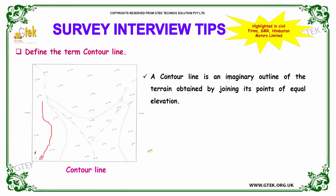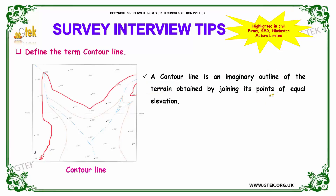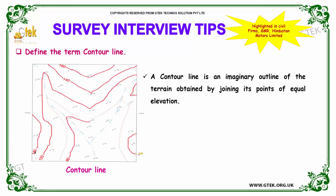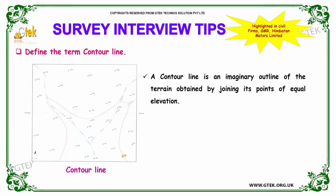Our next question is: define the term contour line. A contour line is an imaginary outline of the terrain, obtained by joining points of equal elevation. You can have many contour lines by joining such points.